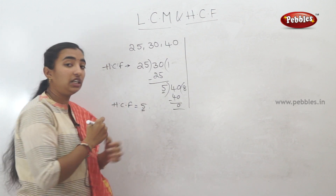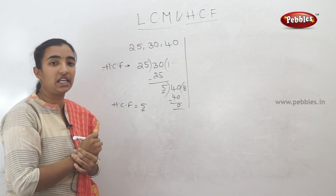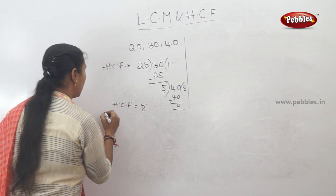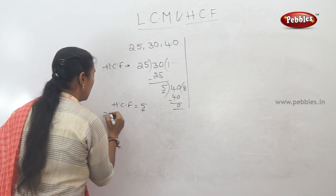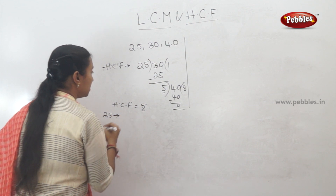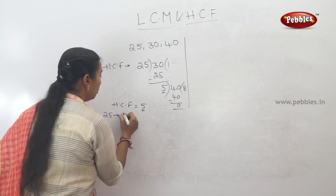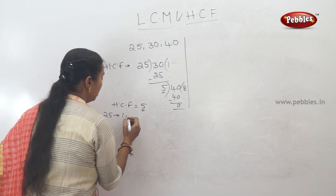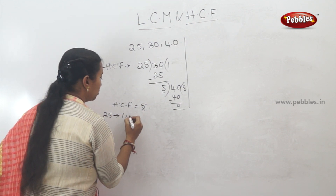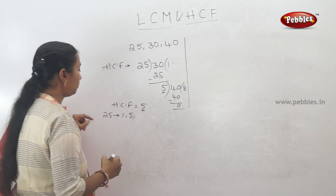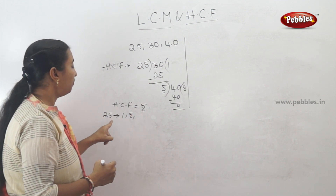We'll use the shortcut method. How many factors does 25 have? The factors of 25 are: 1, 2, 3, 4, 5.